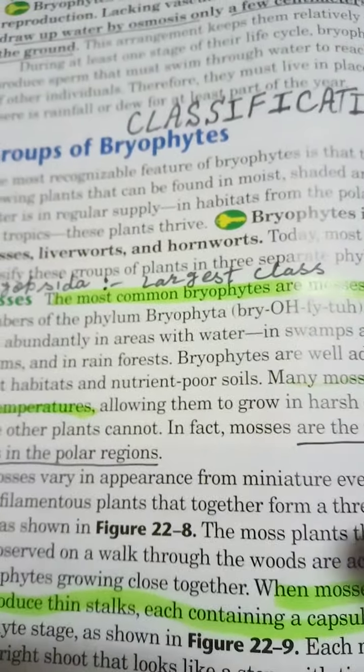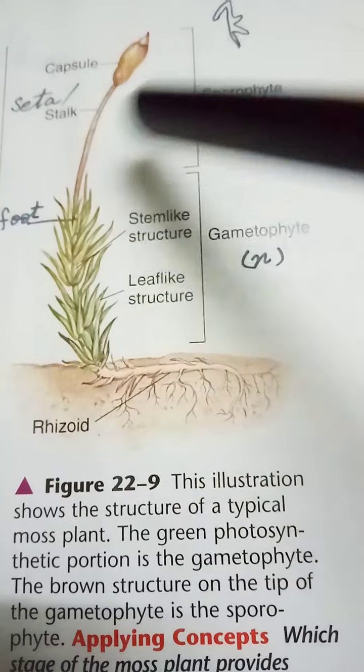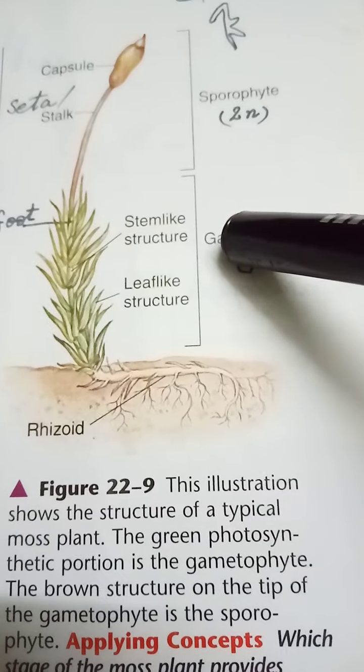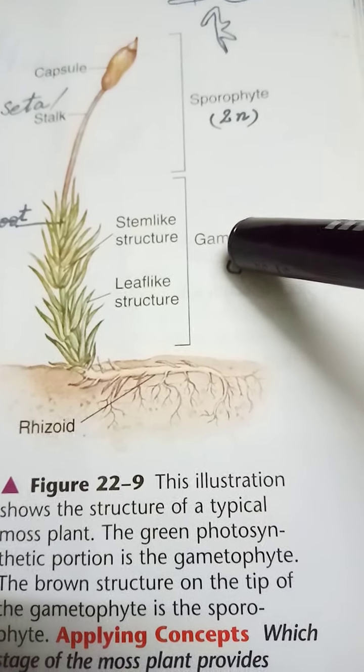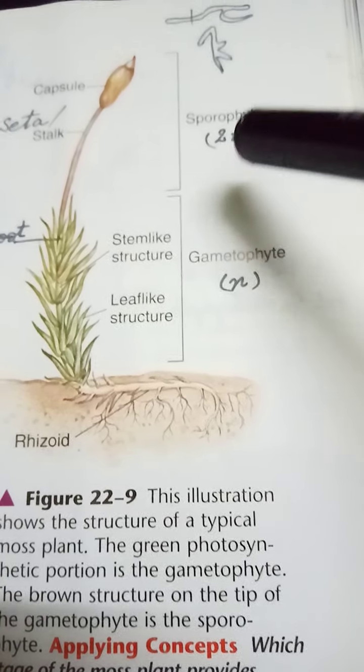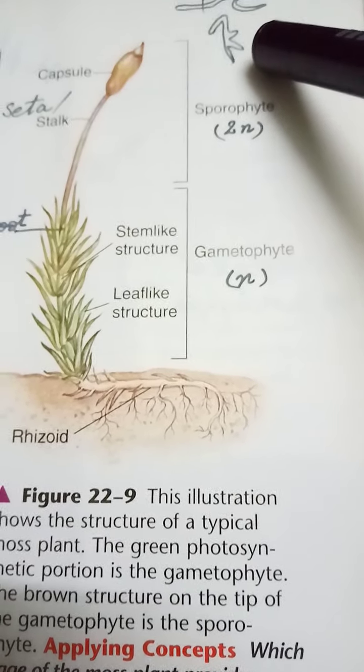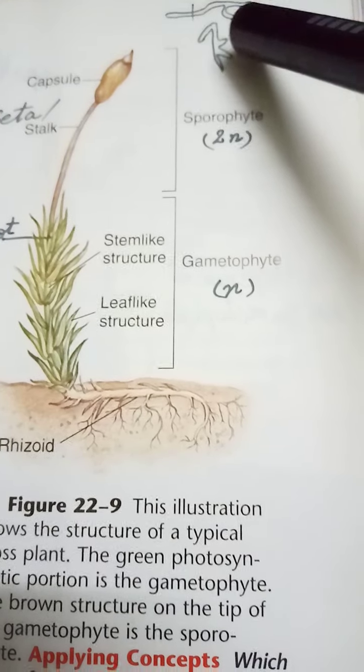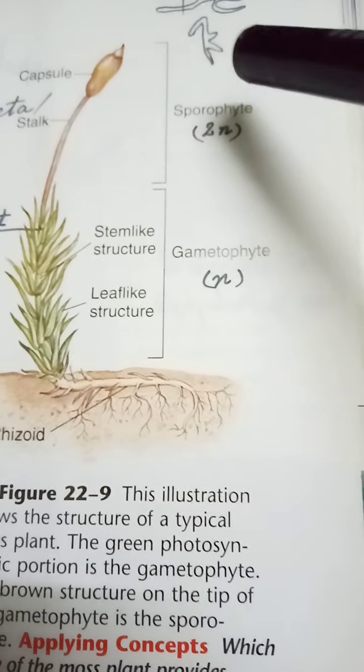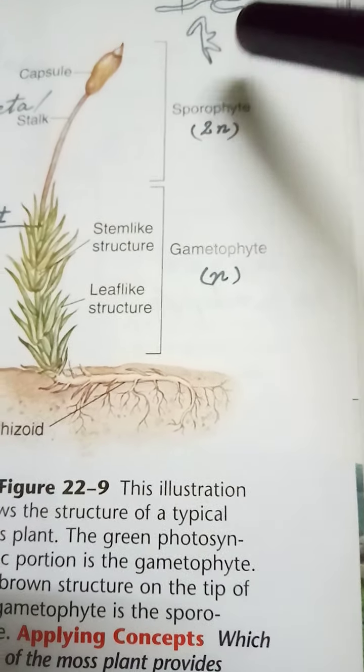In mosses, the gametophyte consists of a protonema-like structure or leaf- or stem-like structure. The sporophytic phase is divided into three parts: foot, seta, and capsule. The foot is embedded in the rosette leaf, and spores produced in the capsule germinate to develop into the gametophyte, which again develops into the sporophyte. Asexual reproduction also occurs in mosses under unfavorable conditions, mostly by budding or breaking of the protonema.